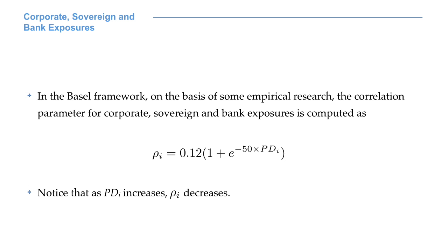Let's consider corporate, sovereign, and bank exposures. In the foundation internal rating-based approach, we are free to compute the probability of default as we prefer, but all the other quantities, or the way in which we have to compute them, is given by the regulator. On your screen, you see how we are supposed to compute the correlation parameter for corporate, sovereign, and bank exposures. Have you noticed that in this formula, based on some empirical studies, the PD and the correlation move in two opposite directions?